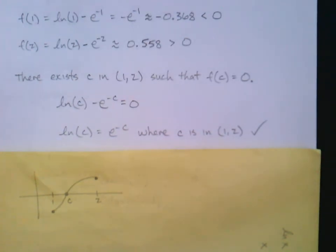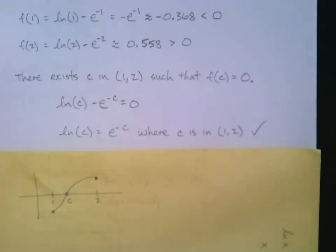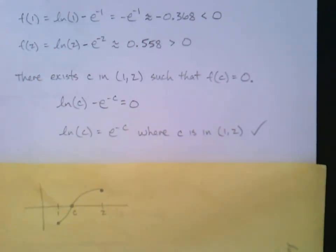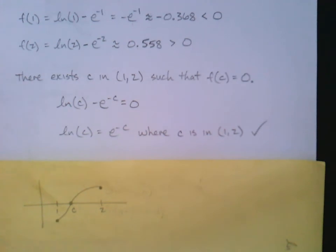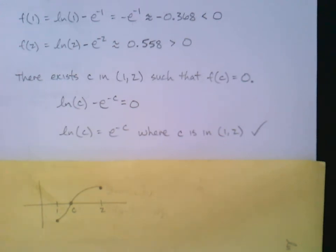It's a little unsatisfying that we don't actually find the value of c, but we showed it must exist — and that's not nothing. The intermediate value theorem is used to prove solutions exist, and while we can't find the value algebraically, we can at least show it exists. There are actually many interesting applications of the IVT.